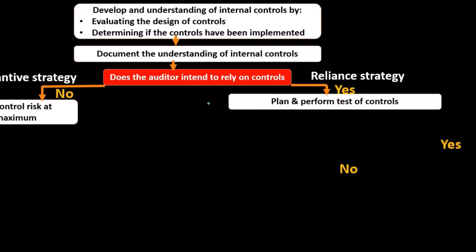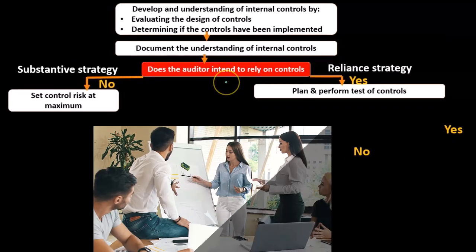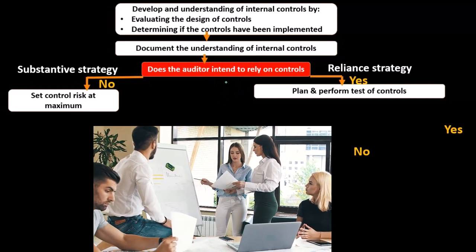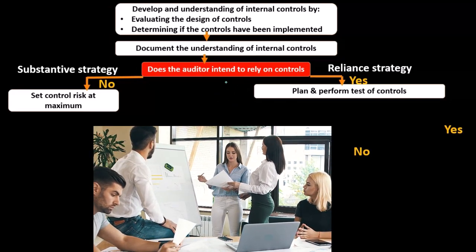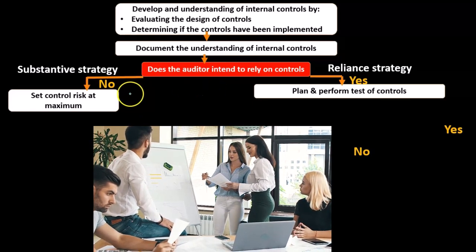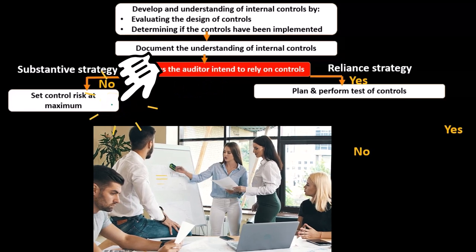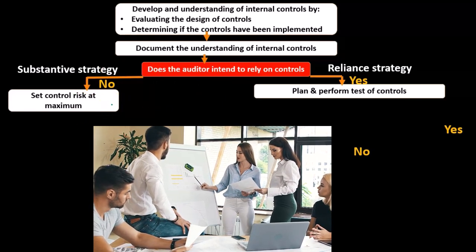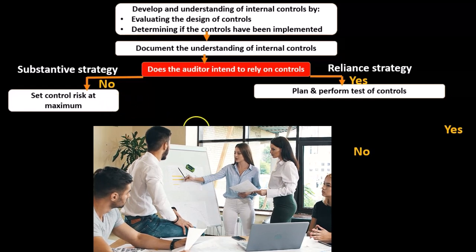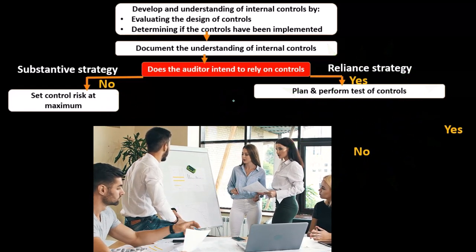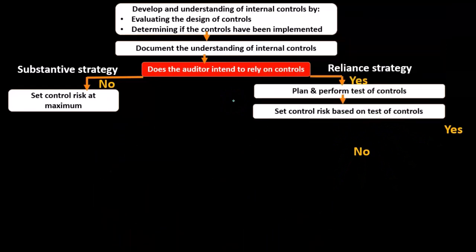If we're going to rely on internal controls, we do further planning and testing related to those controls. It's more efficient to test the checks and balances in the system rather than checking the end result of all transactions. By depending on the controls, we can then do less actual substantive testing.